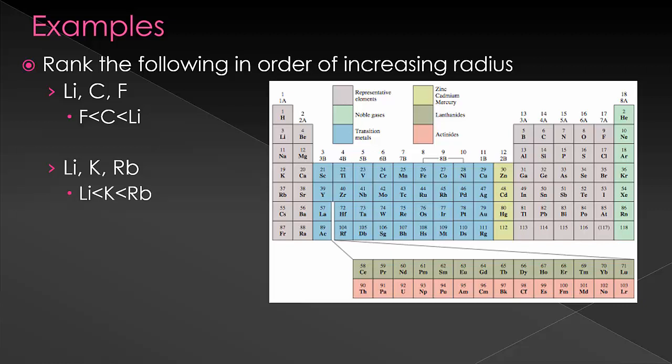Another example of a problem that you could get would be something like barium, selenium, and fluorine. These fall on a diagonal, with barium being on the bottom left and fluorine on the top right. Since up and to the right both equal the smallest atomic radii, F must be the smallest, followed by selenium, followed by barium. We can rank these with no other information because the diagonal goes with both trends.